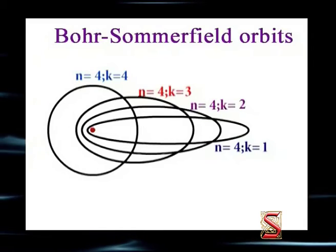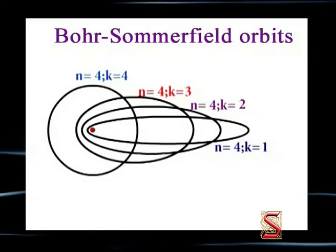Here you can see there are 4 elliptical orbits for N equals 4. Thus, Sommerfeld's model showed that the total number of values of K for any N is numerically equal to N. But it could not justify why K should not be 0. Later studies based on wave mechanics as well as experimental evidence showed that the azimuthal quantum number begins with 0.